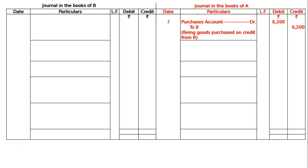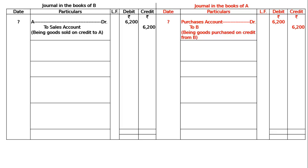In the books of B, A is debited to sales account Rs. 6200, being goods sold on credit to A. B sold to A, A bought from B. Then B drew the acceptance and A signed it.